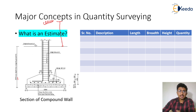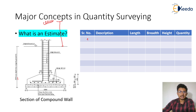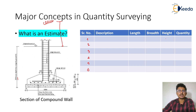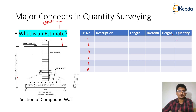Now let's define the quantities from the start of the work. This is what our quantity sheet will look like — it has a serial number, a description of the item, then the length, breadth, and height columns, and finally the total quantity, which is the multiplication of those three dimensions. Most items are measured by length, breadth, and height, so multiplying these three gives us the quantity of each specific item.